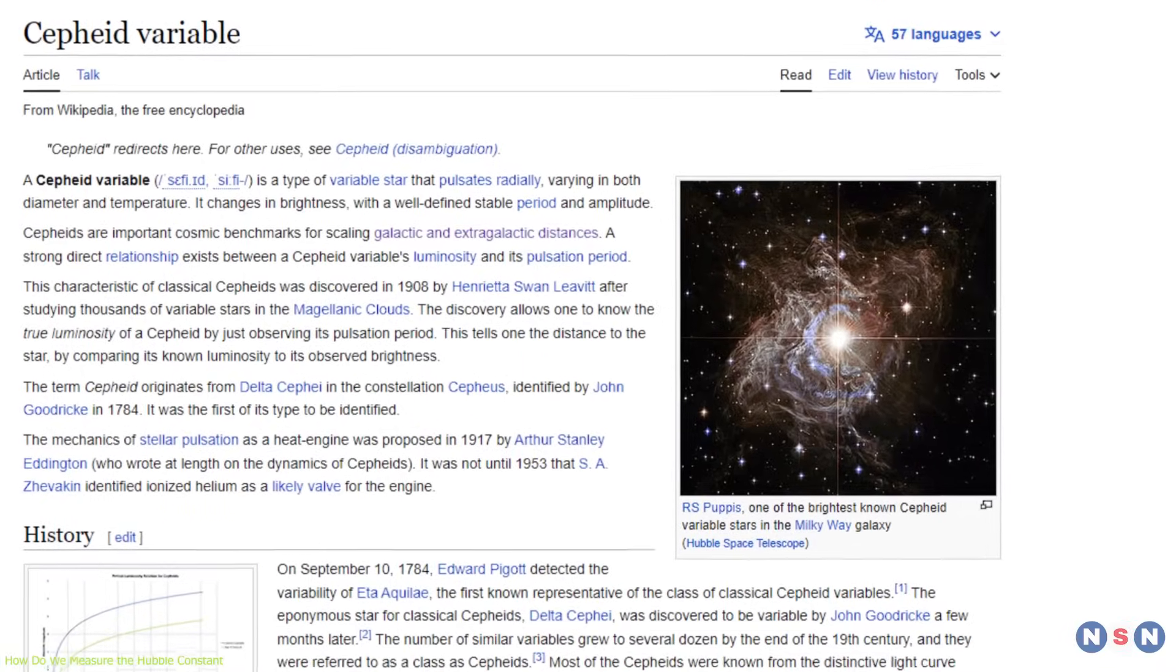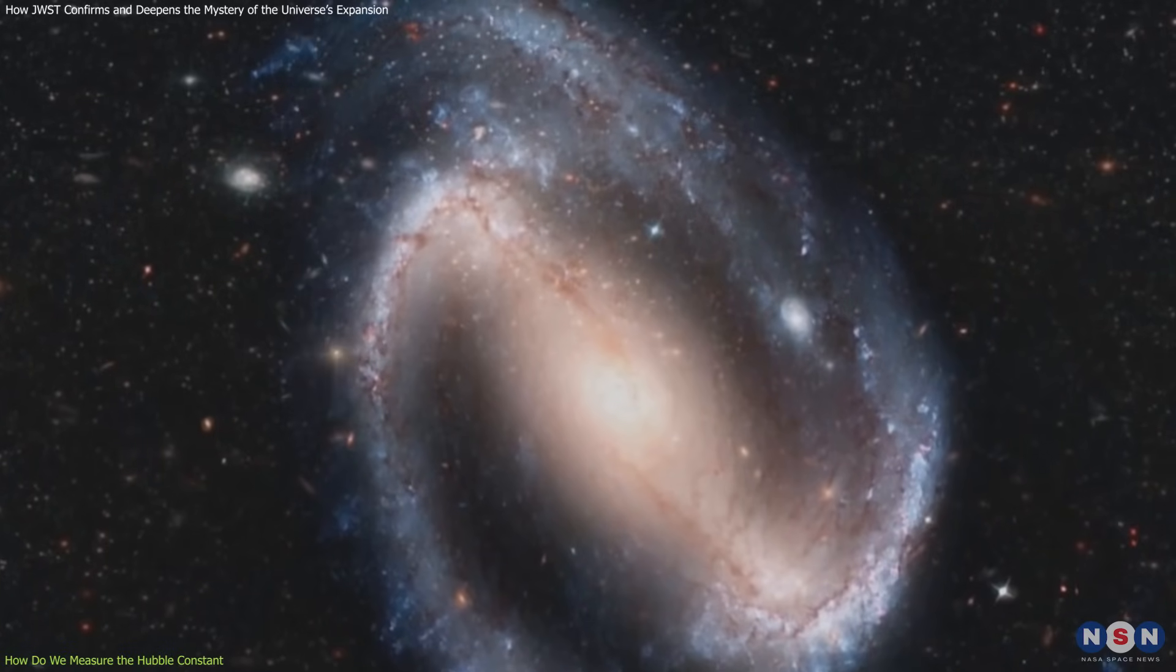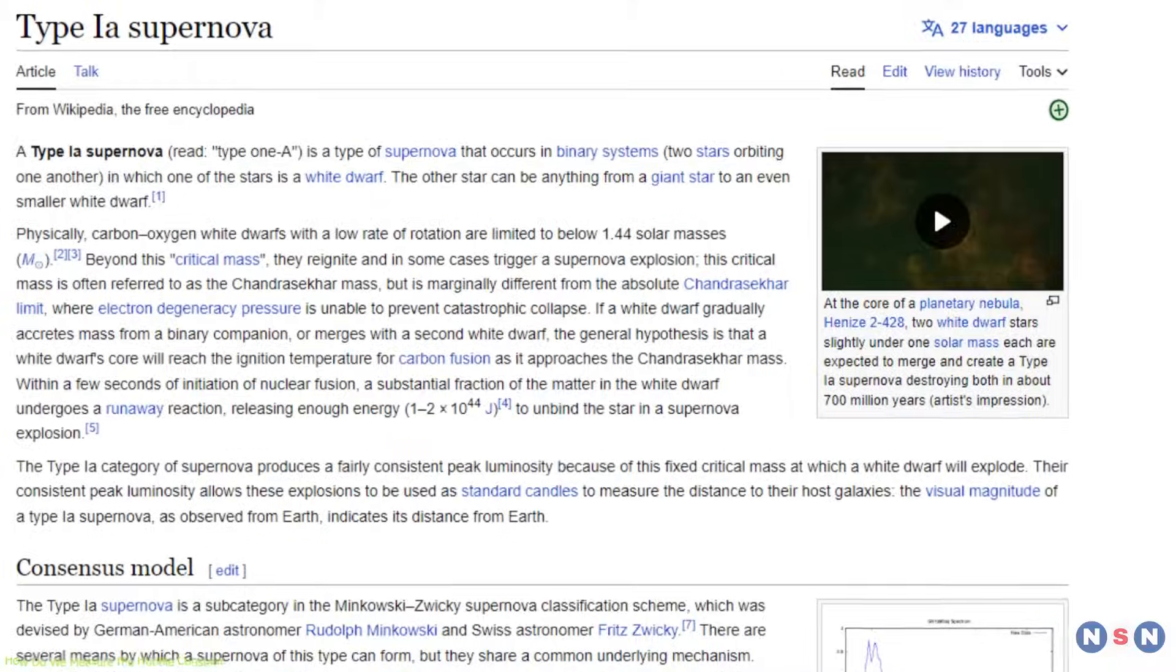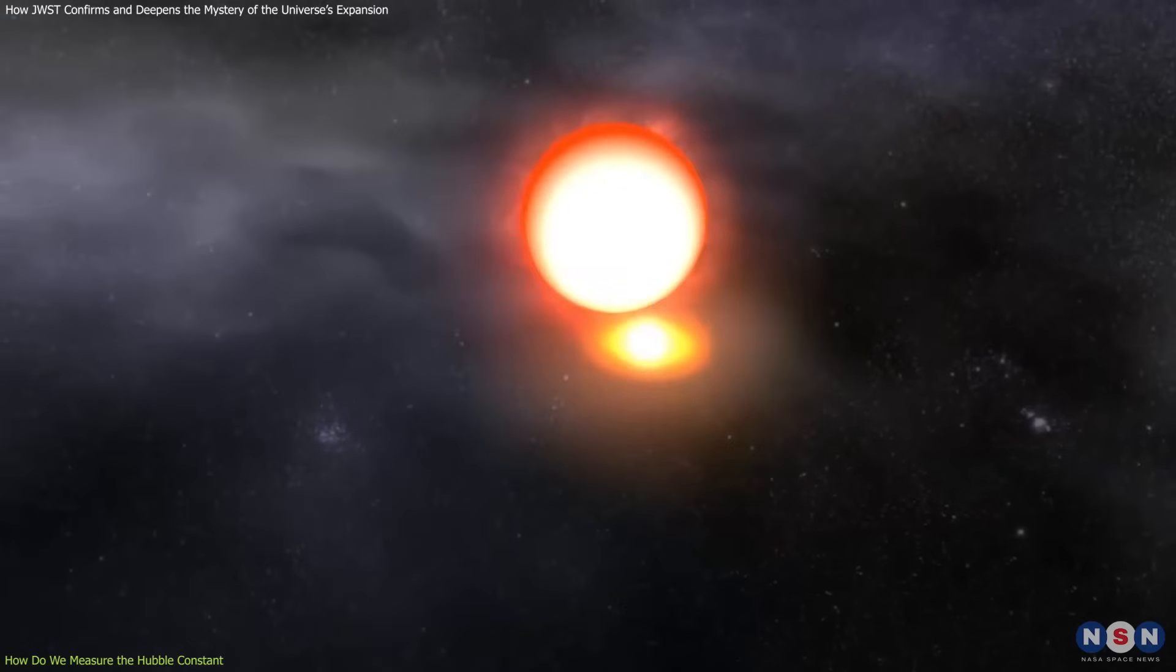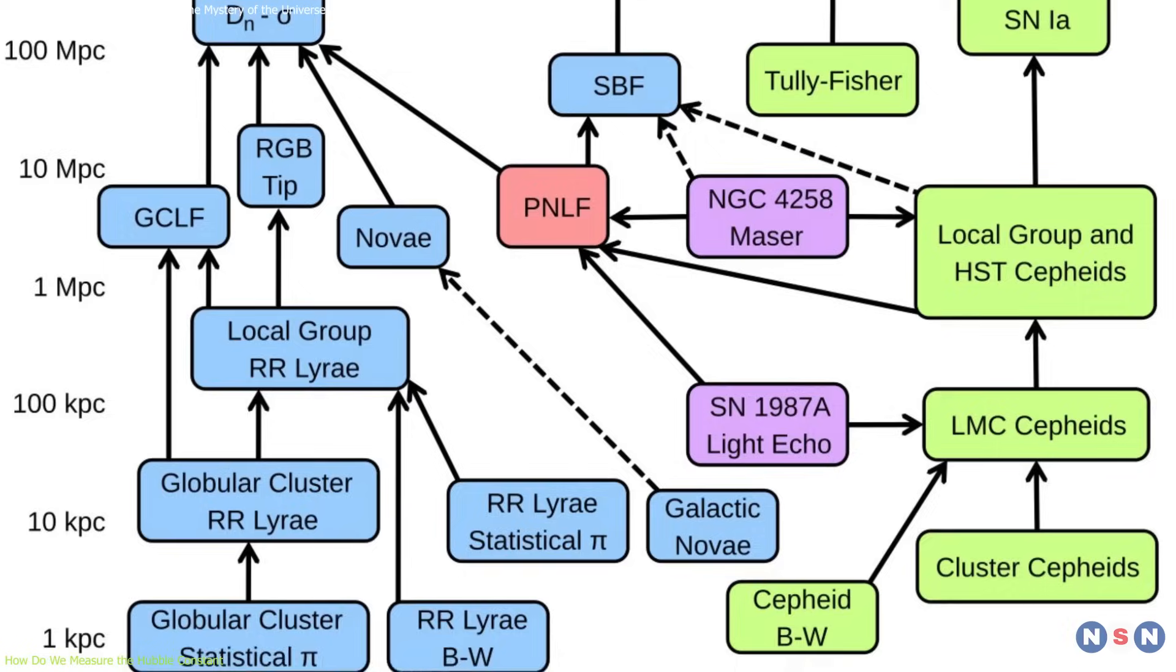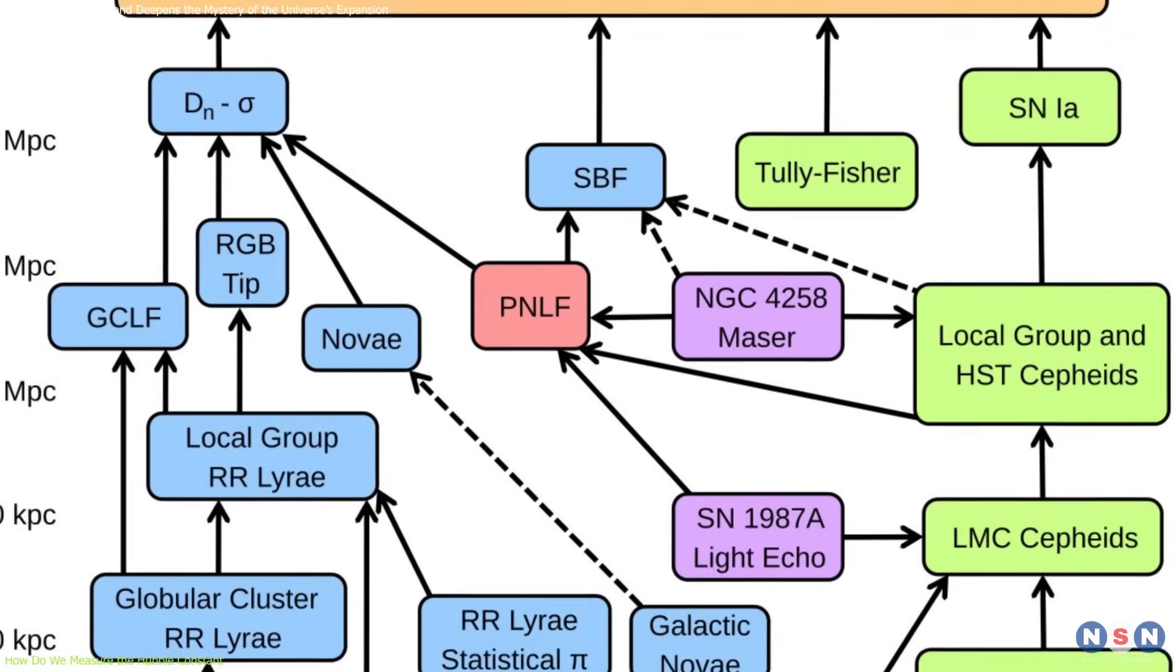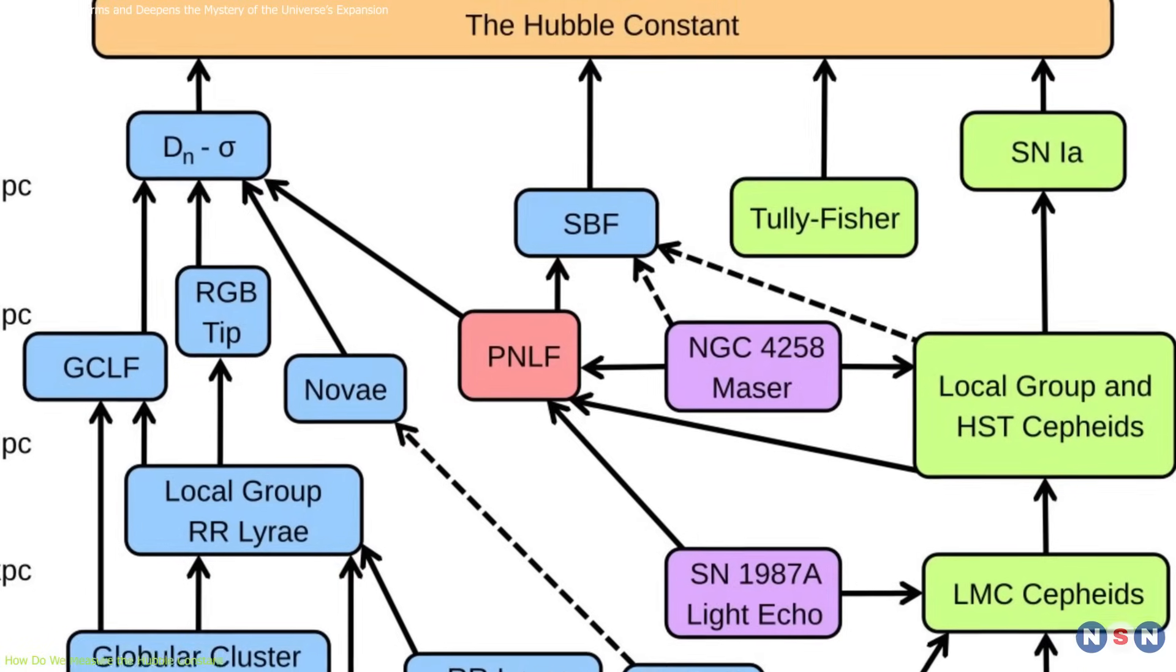The Cosmic Distance Ladder method uses different types of standard candles, such as Cepheid variables, which are pulsating stars that have a relationship between their brightness and their period of pulsation, and Type Ia supernova, which are exploding stars that have a uniform brightness at their peak. The Cosmic Distance Ladder method gives us a value of the Hubble constant of about 74 kilometers per second per megaparsec.